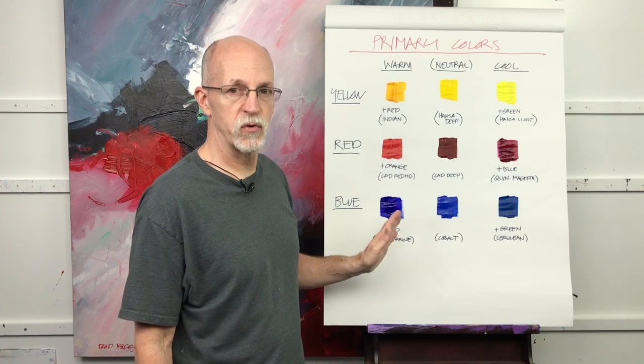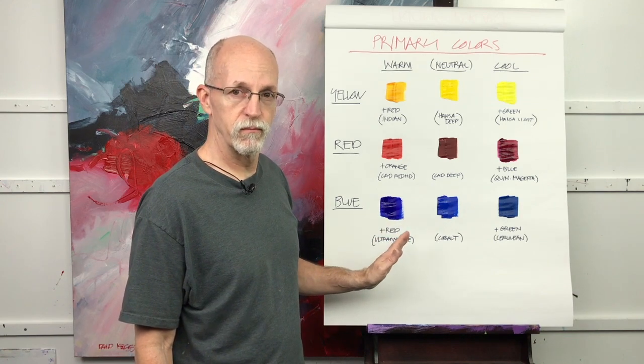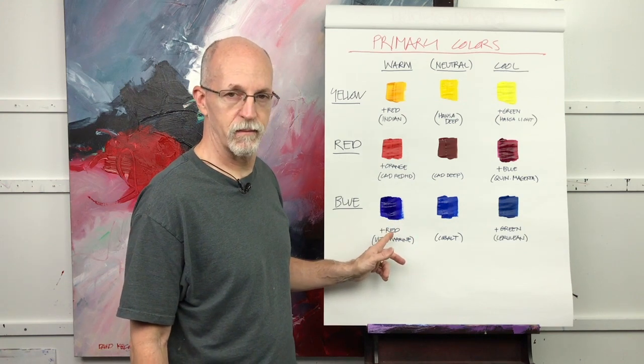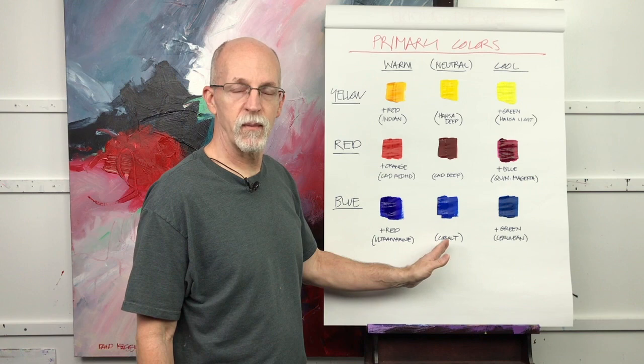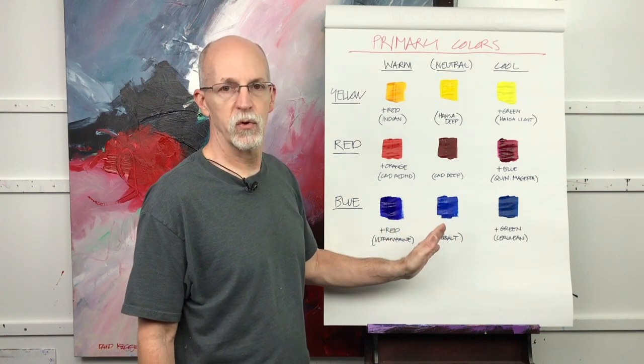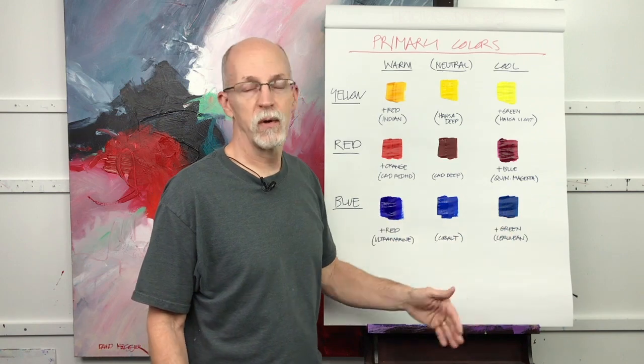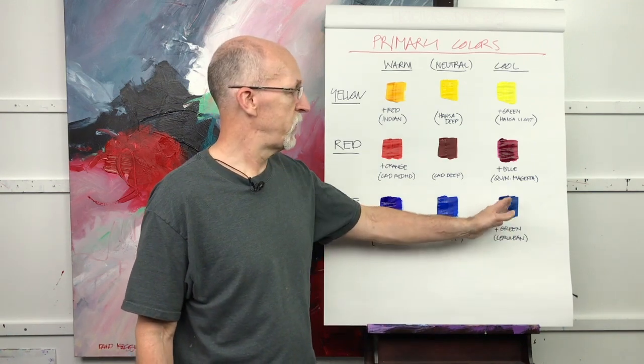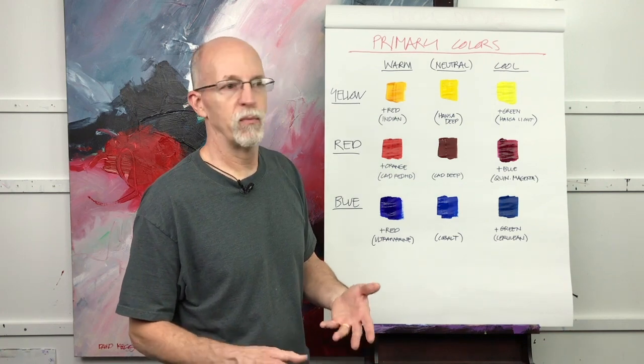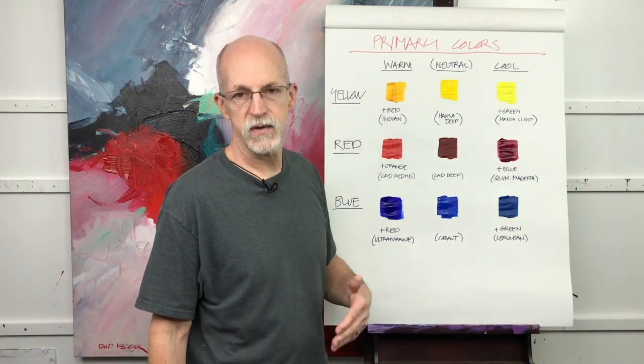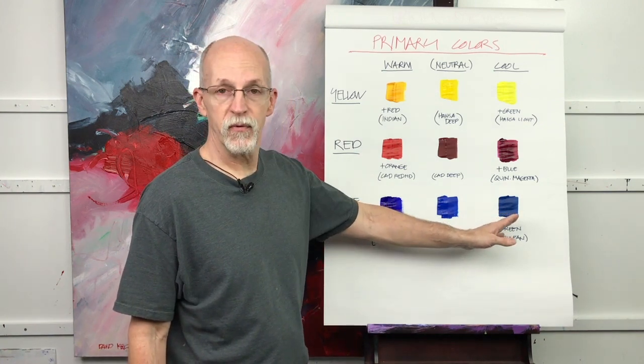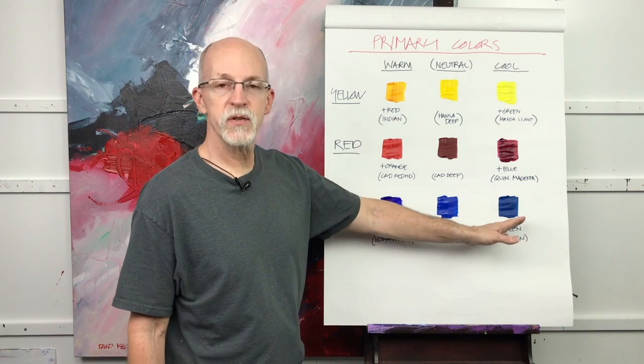Now for a neutral blue or primary blue I use cobalt blue because it's really neither warm nor cool. For a cool blue, and there are many cool blues, I pick cerulean blue. There's also phthalo blue and Prussian blue and manganese blue. You can name a whole list of cool blues, but personally I prefer cerulean blue and it has green in it.